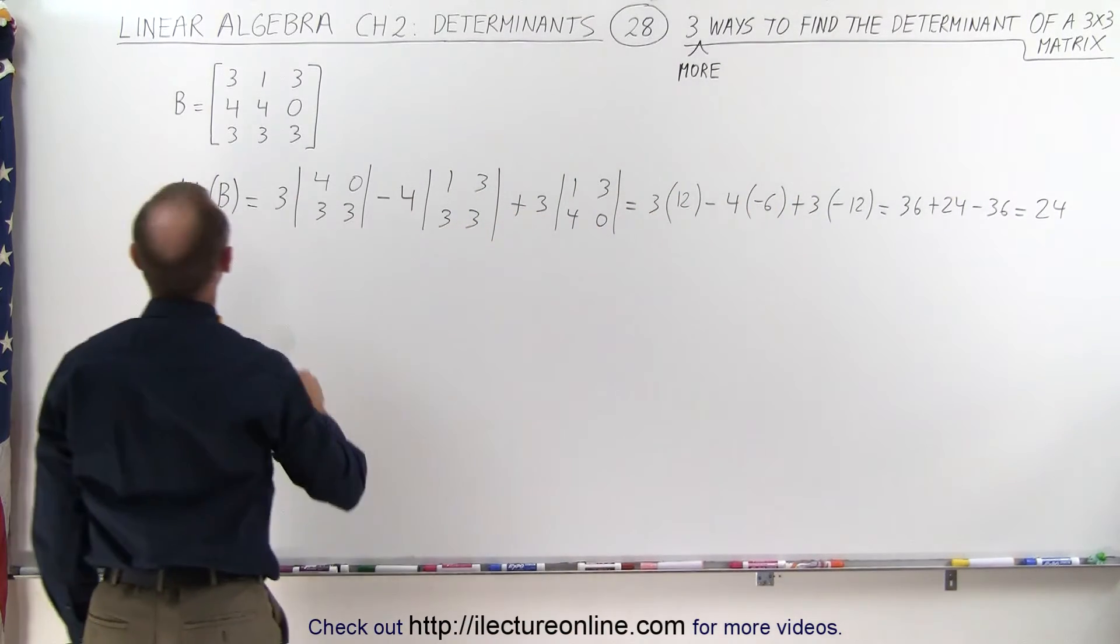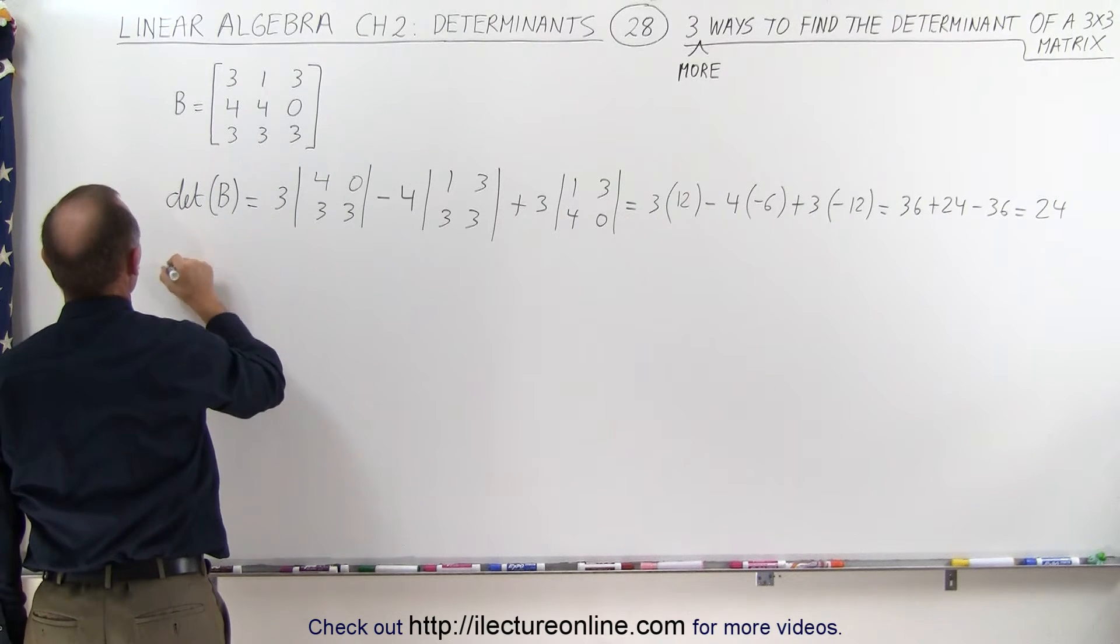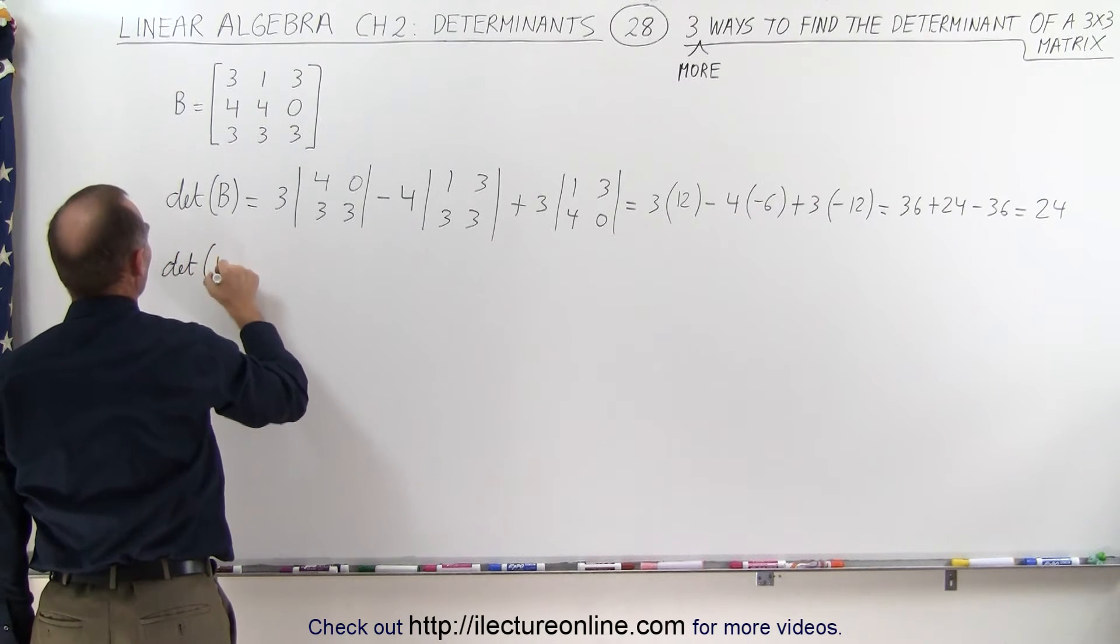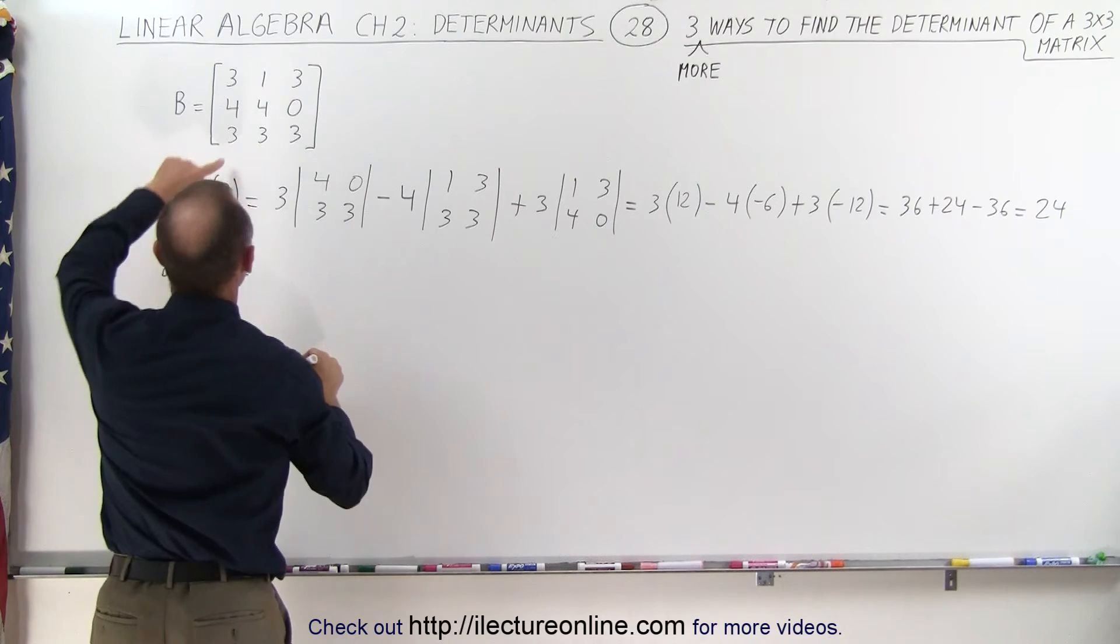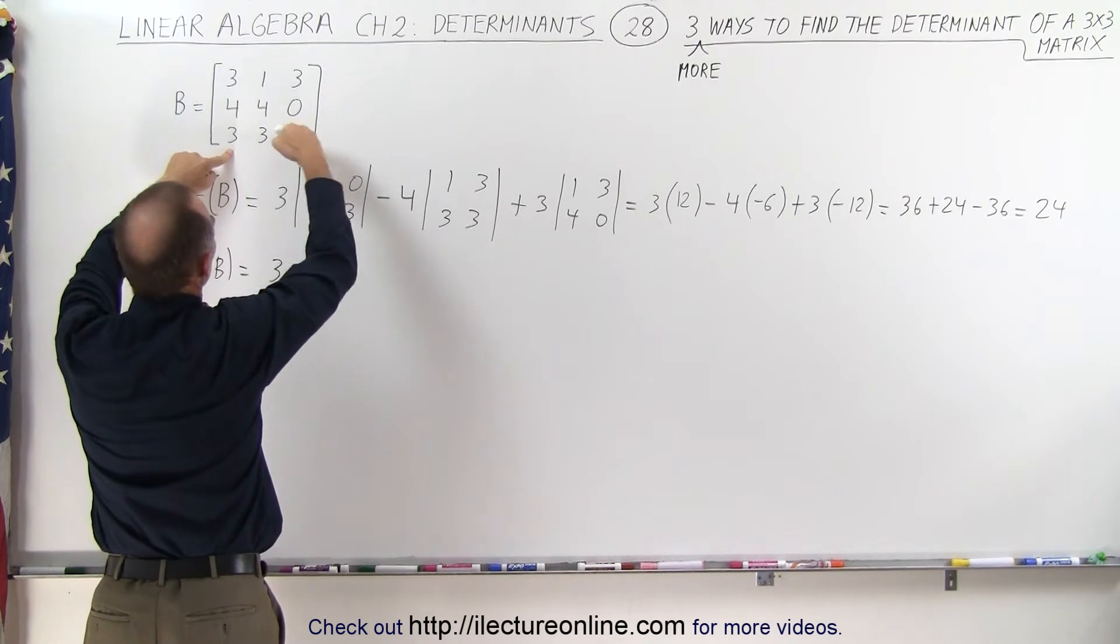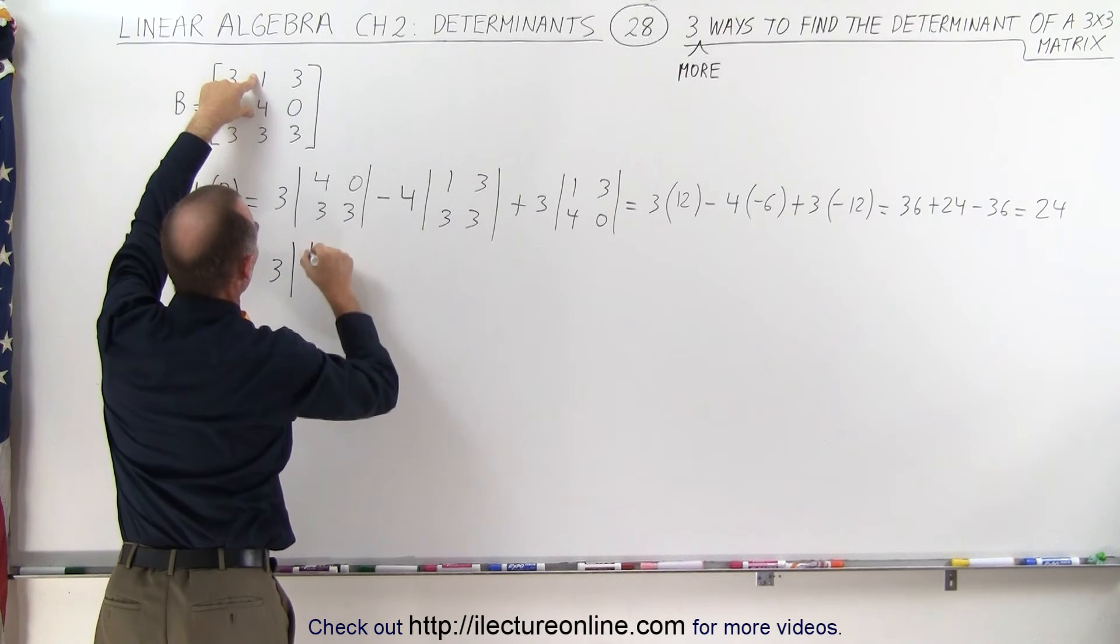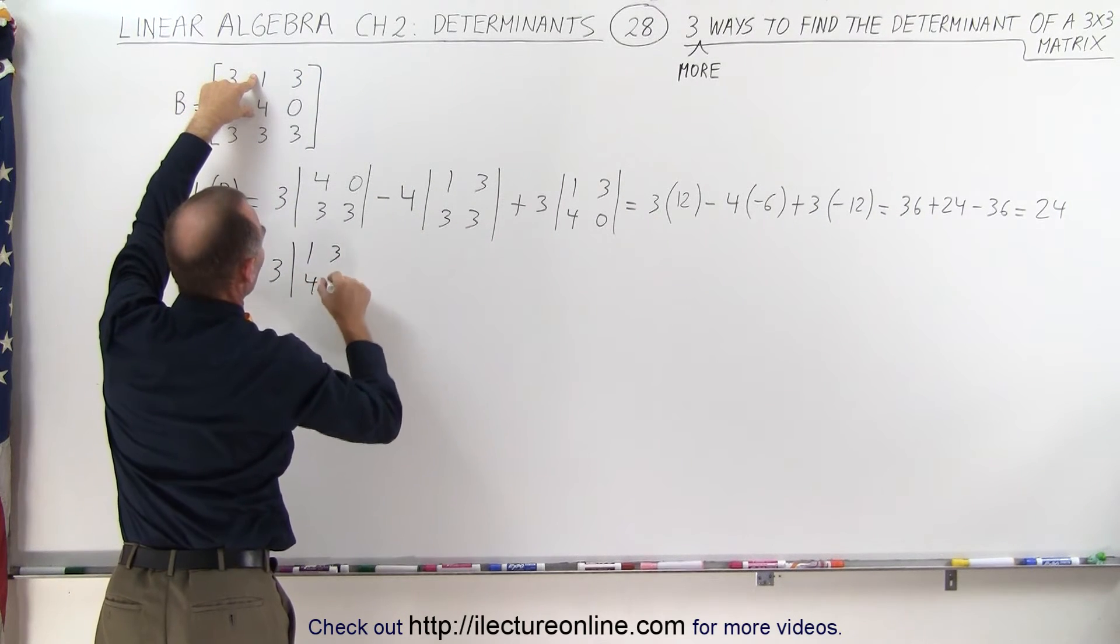All right, now we'll do it again. But now we're going to take the bottom row right here. The determinant of the matrix B is equal to, starting with this element right here, 3 times when we cross out this row and this column, we end up with those four elements, the determinant of 1, 3, 4, and 0.